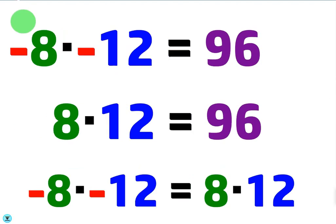Okay, so here's another one, negative 8 times negative 12 will just be the same as 8 times 12 which is 96. So that's what a negative times a negative is, it's a positive.